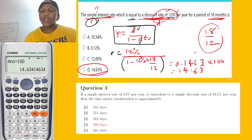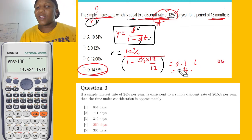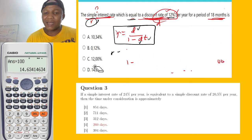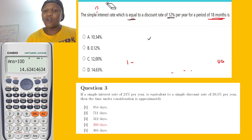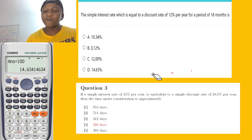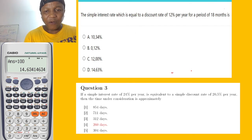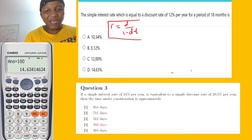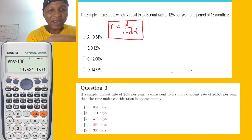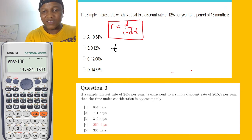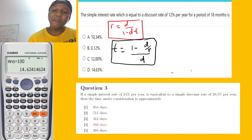Let's do the second question. There's a formula we use whenever there's a relationship between discount and simple interest rate. The formula is I equal to D over 1 minus DT. But at some times, you can use a rearranged formula: T equal to 1 minus D times R over D, if you're looking for time. You can memorize this second formula.